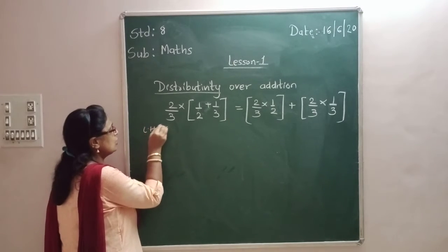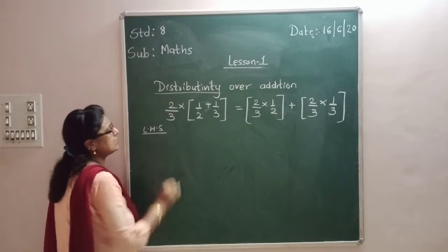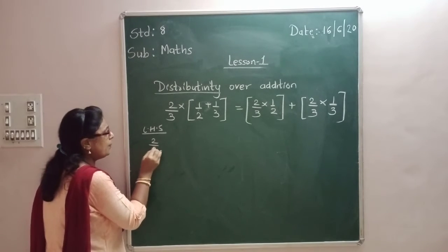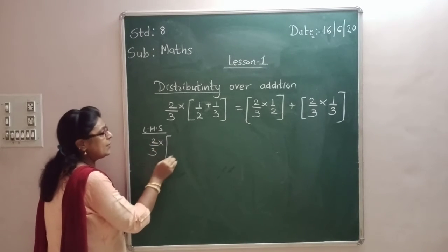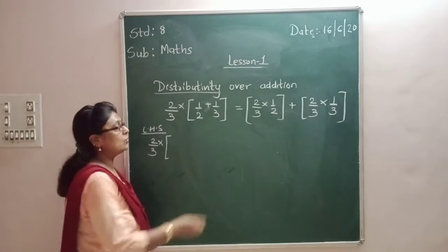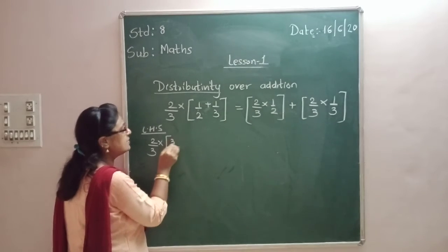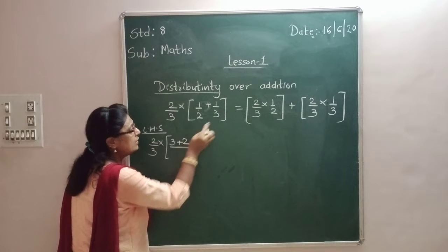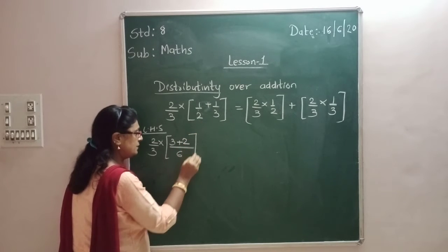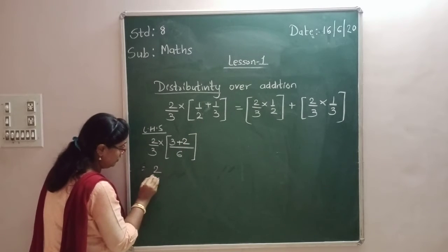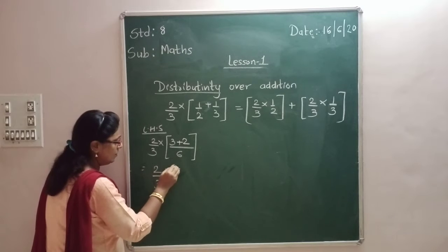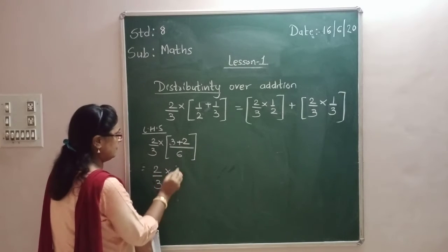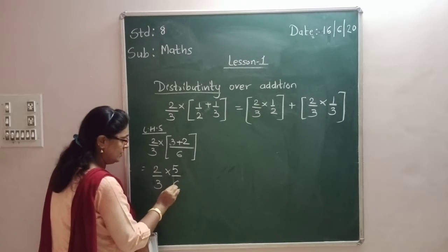When I start solving, let me start with LHS. So 2/3 multiplied by — when I solve this bracket and cross multiply — I get (3 + 2) whole upon 6, which equals 2/3 multiplied by 5/6.